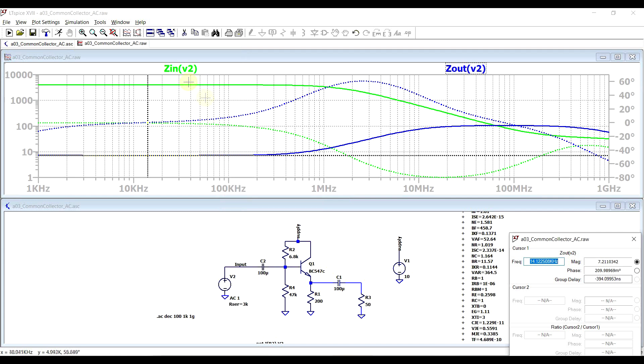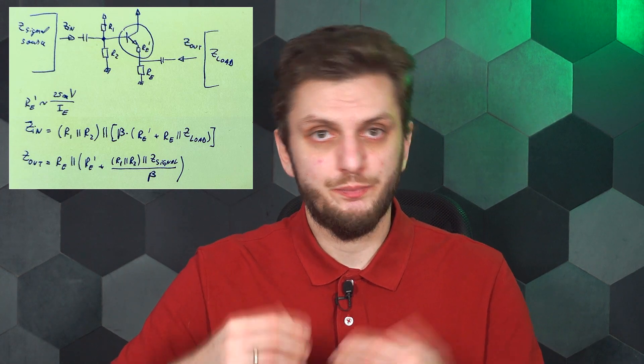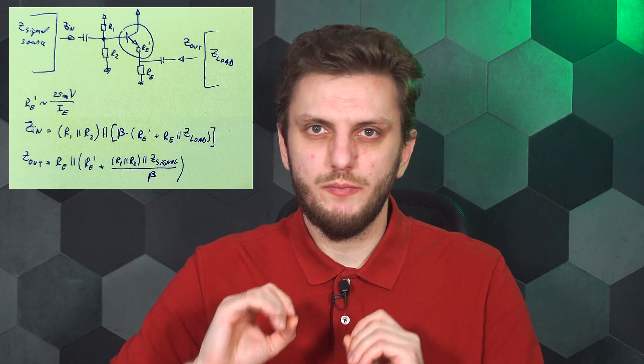Now there are some formulas with which you can determine the input and output impedance of the common collector amplifier, and depending on your use case you might want to make some adjustments. So now let's try to reduce the input impedance.